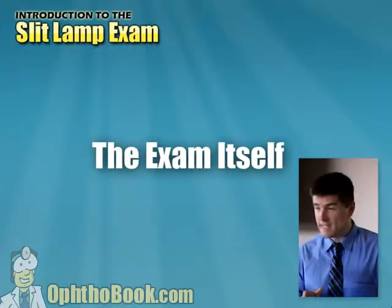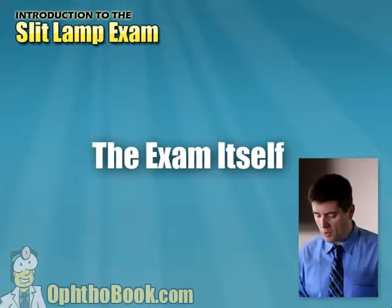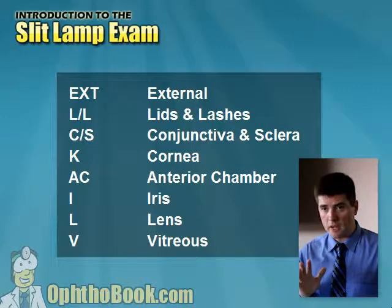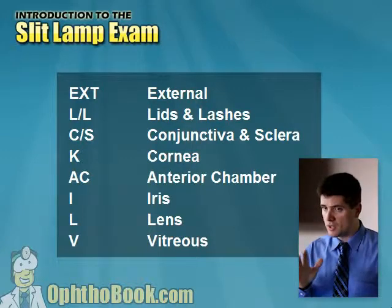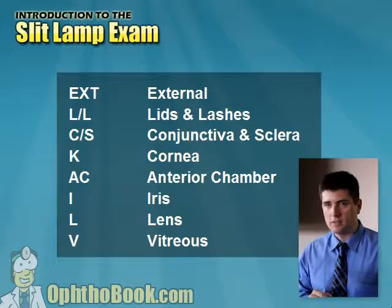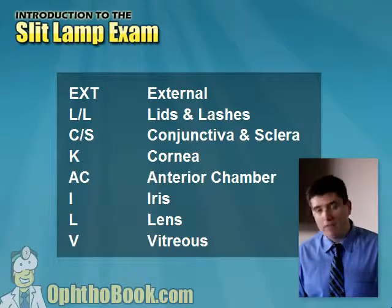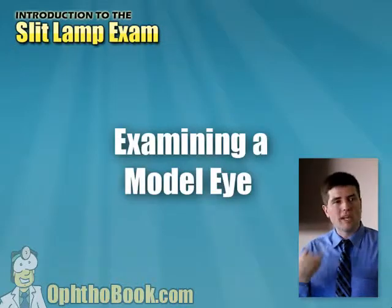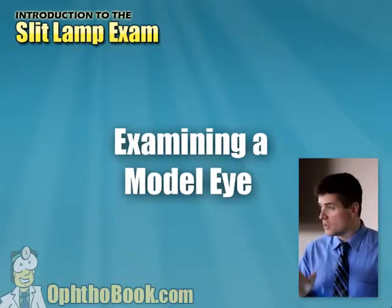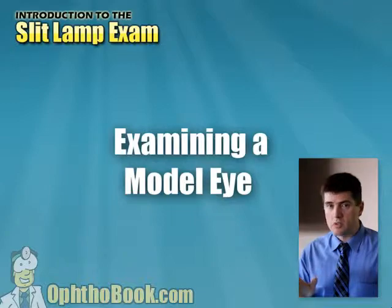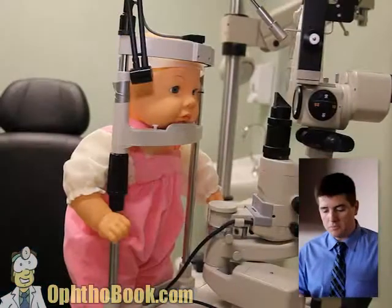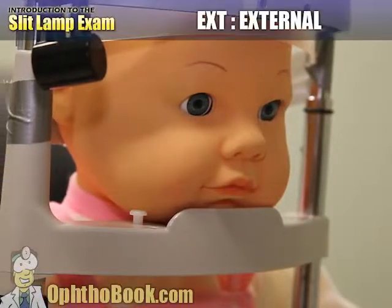Let's move on to the exam itself. There are eight findings that we look at in the front part of the eye — not the retina, just the front. I call these the Ocho — el ocho, not to be confused with El Niño. Instead of just reading these out, let's look at all these findings first starting with a model that's a little bit more anatomically correct, and then we'll move on to live patients.